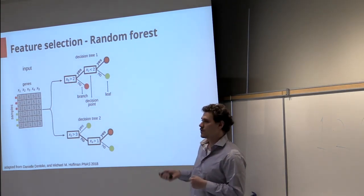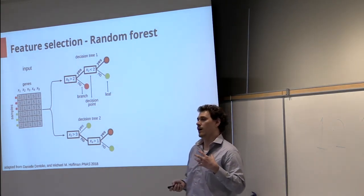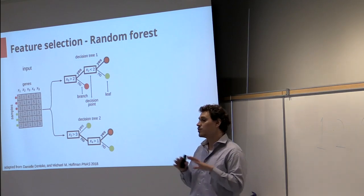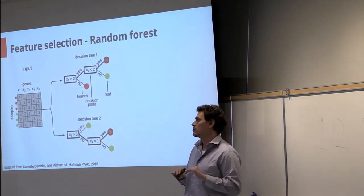At each decision point we evaluate a couple of randomly selected genes and we select the one that discriminates the most between the two samples.